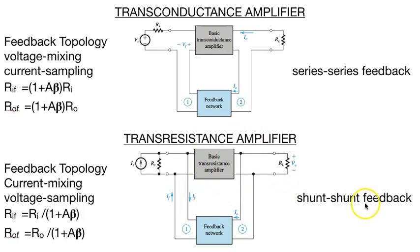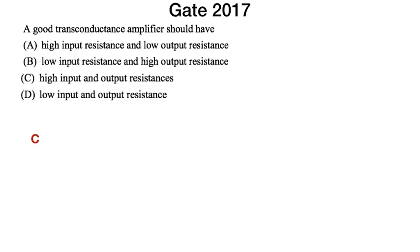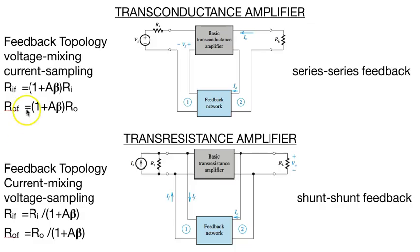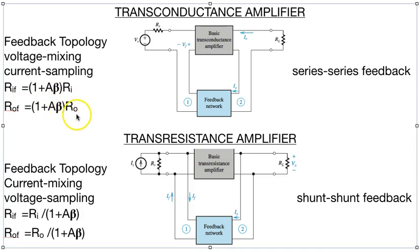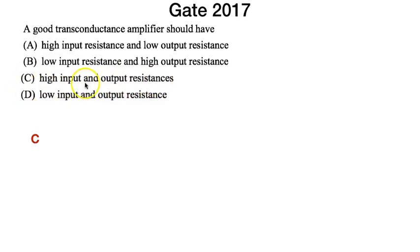For transconductance amplifier and transresistance amplifier, they have a series series feedback voltage mixing current sampling, and current mixing voltage sampling shunt shunt feedback for transresistance. Now let's look at one example that appeared in GATE. A good transconductance amplifier, as we have already talked, will have current at output and voltage at input. That means voltage mixing current sampling. If it is voltage mixing and current sampling, then it must be having high resistance at input and high resistance at output. So C is the answer: high input and output resistances.